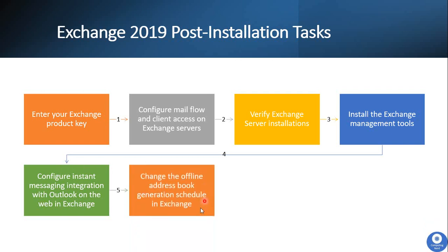Next, you may want to change the Offline Address Book (OAB) generation schedule in Exchange. The OAB is a copy of an address book downloaded so that Outlook users can access its information while disconnected from the server. By default, a new OAB generation schedule runs every 8 hours in Exchange Server, but you can change this interval from the Exchange Management Shell as per your requirement.